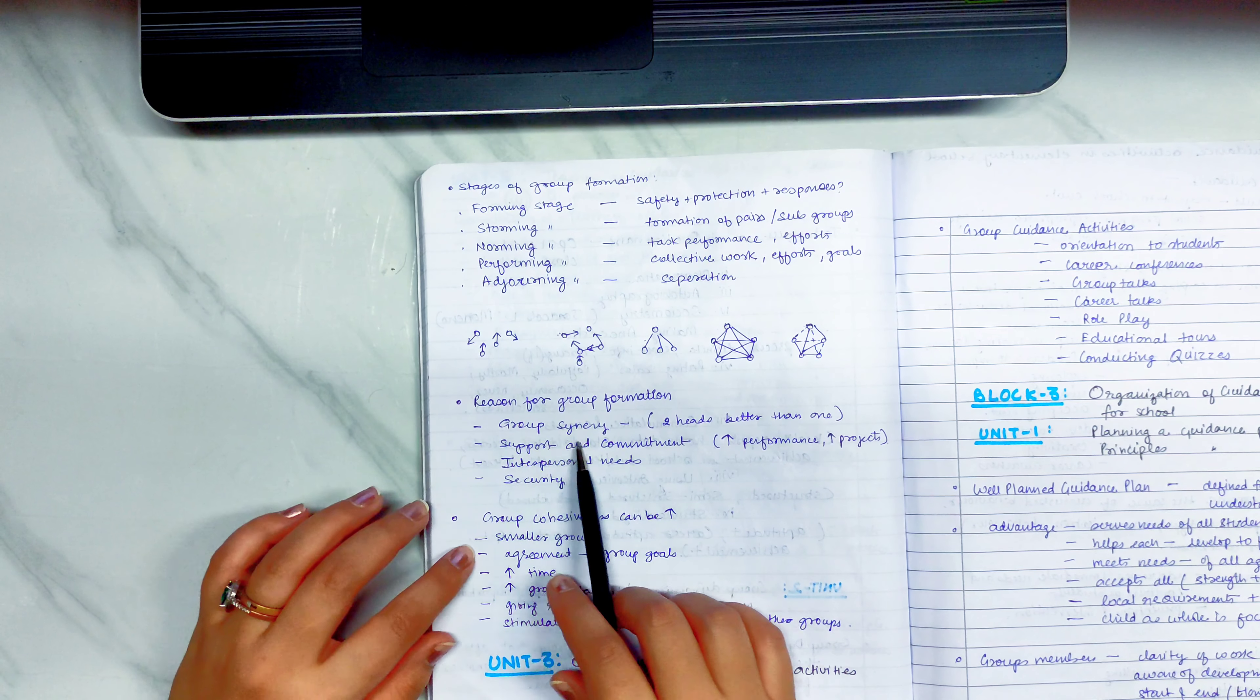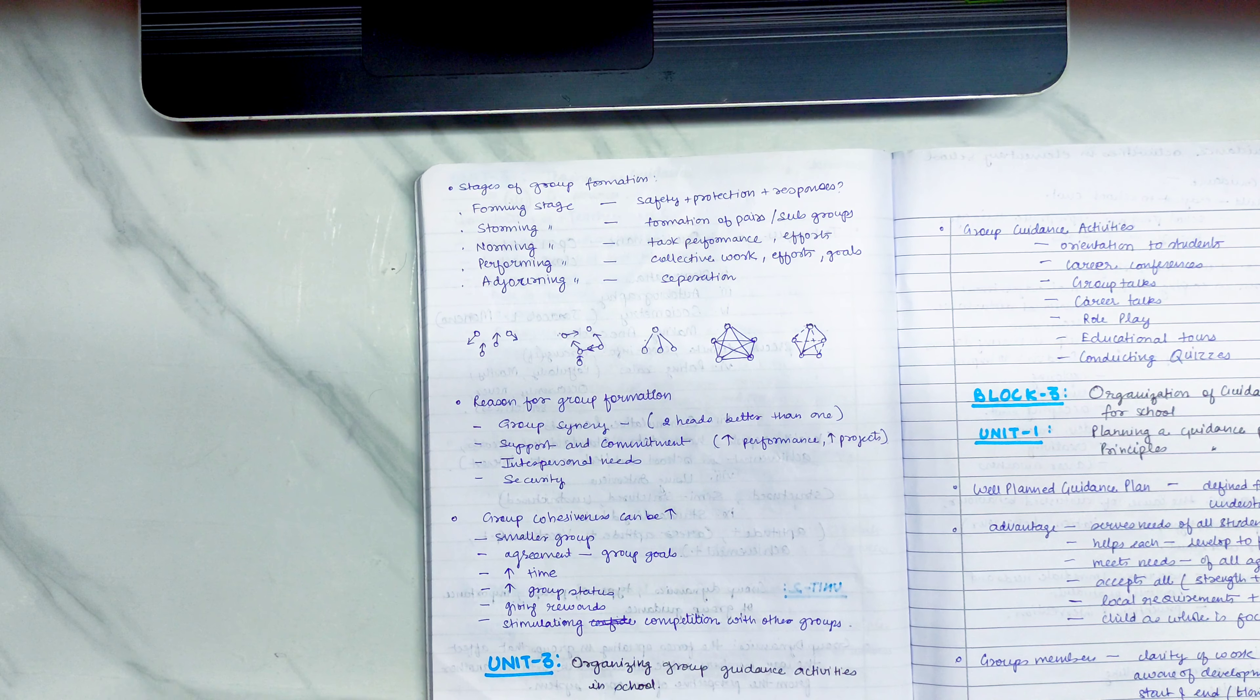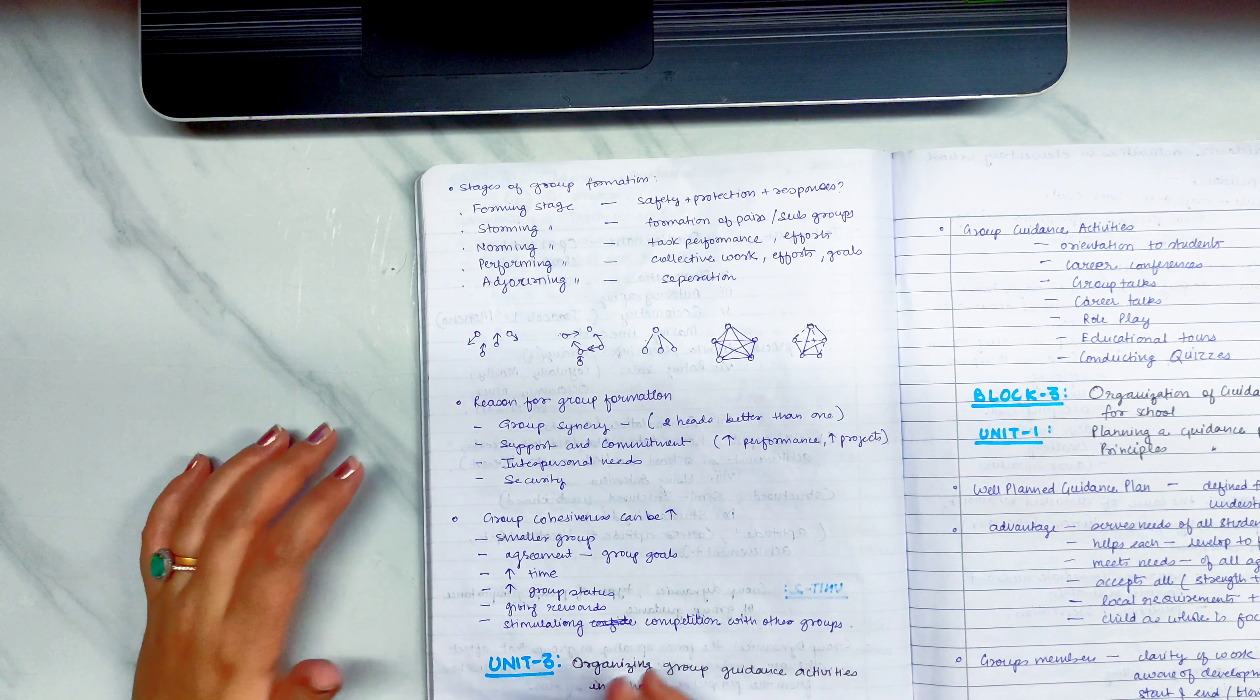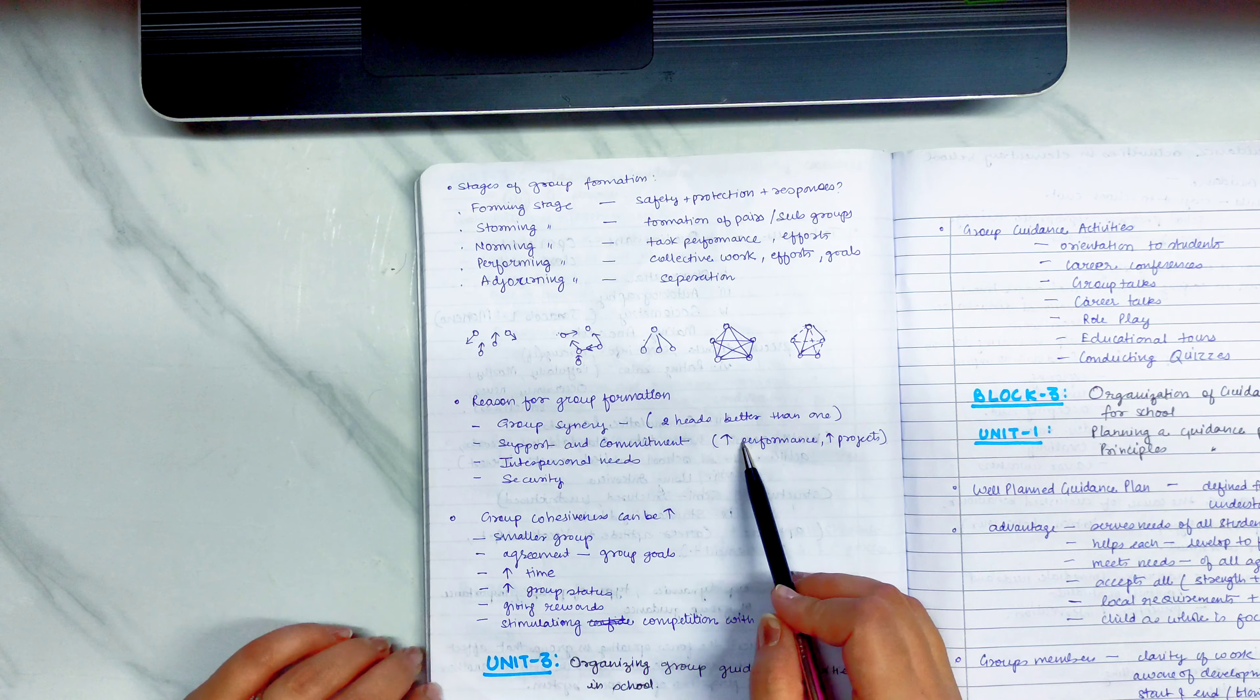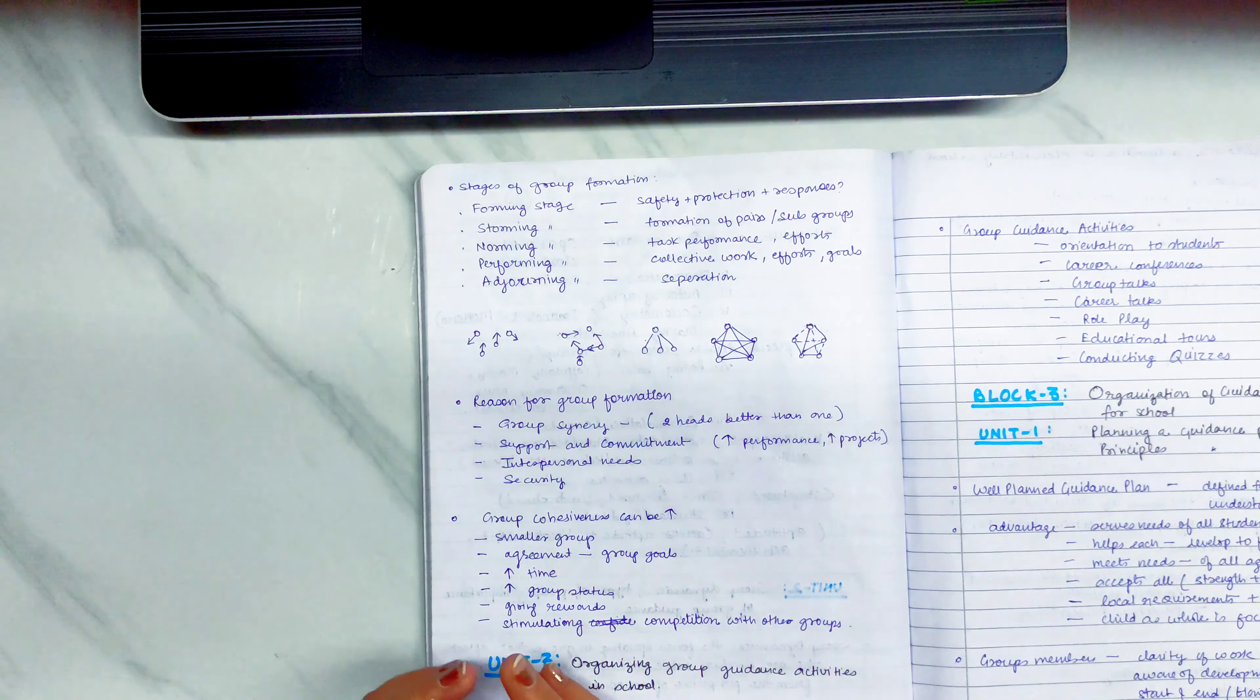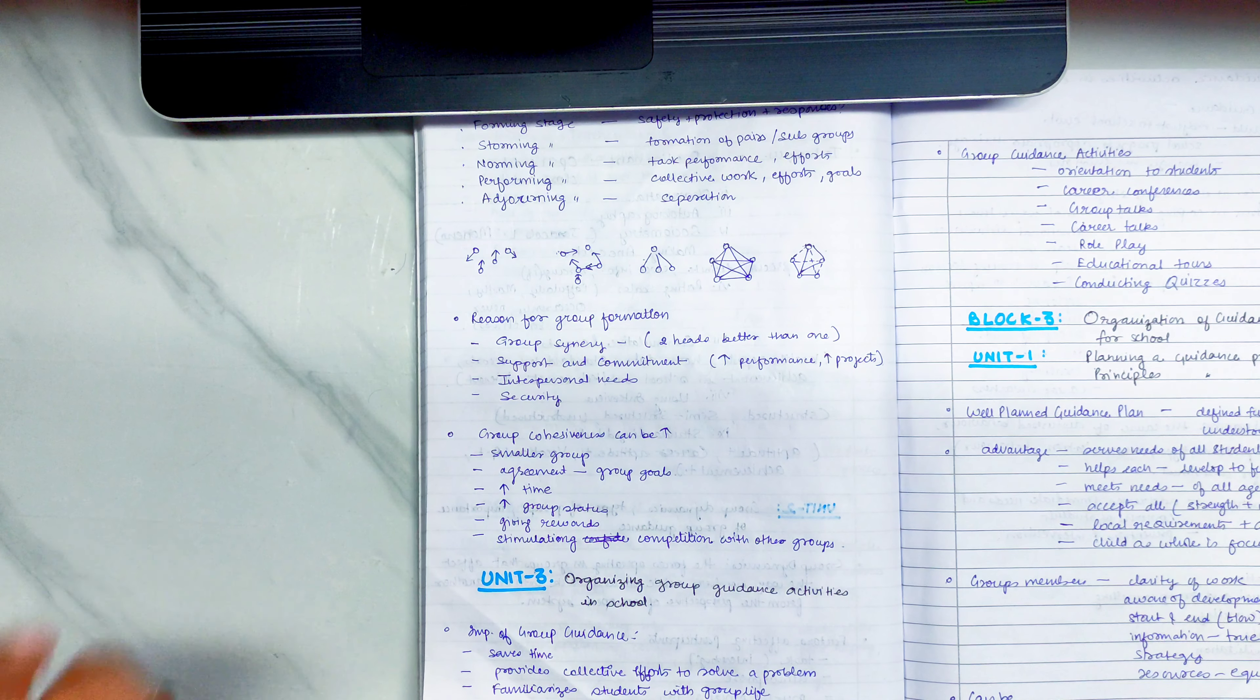What is the reason for group formation? Group synergy means that two heads are better than one. Support and commitment. If your formation is good then your performance is high and your projects have better output. Interpersonal needs. If you have needs and they are combined then they can be better. And security is always good because if you are working in a team then profit will be double and if you have loss then loss will be divided.